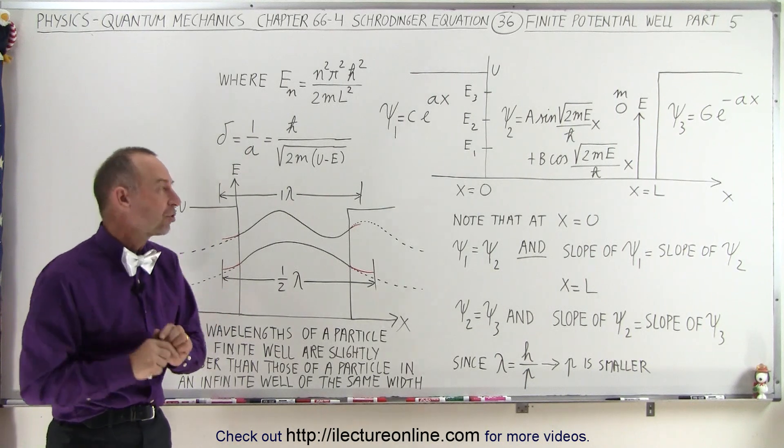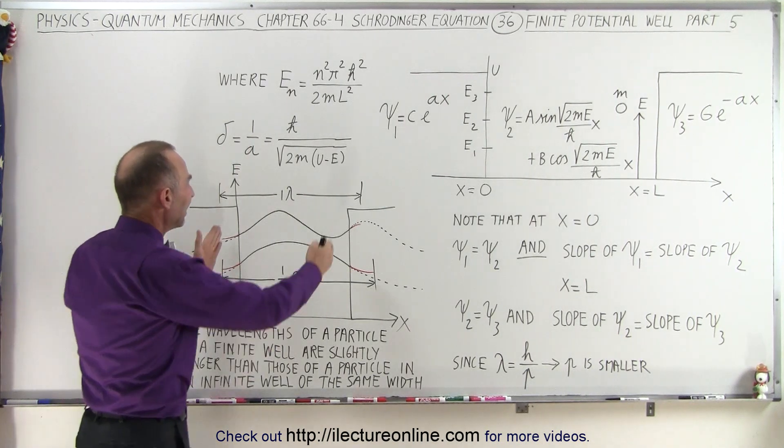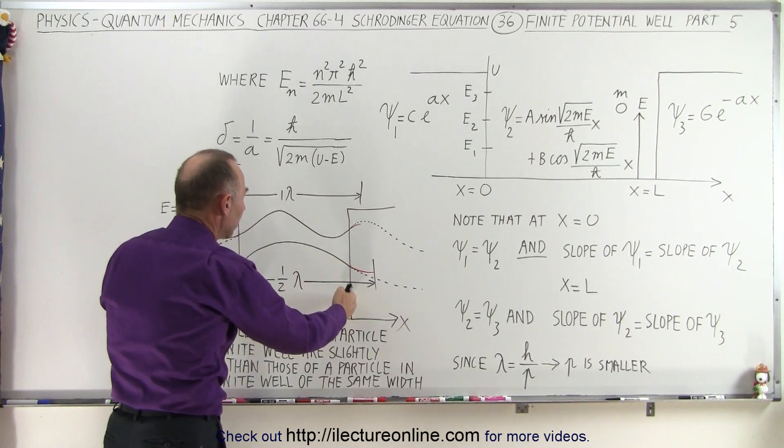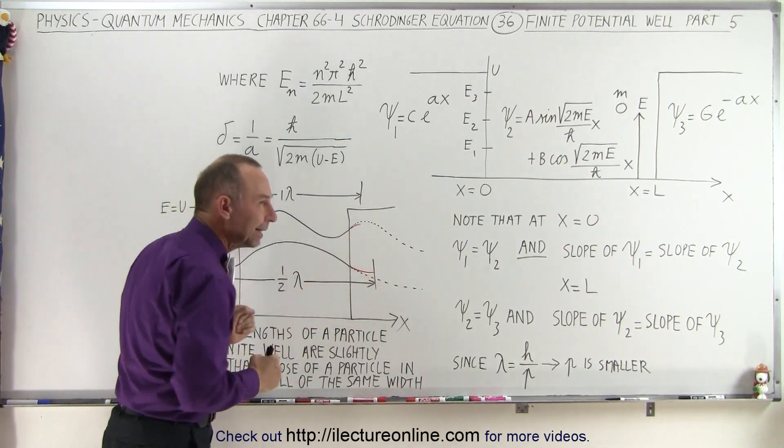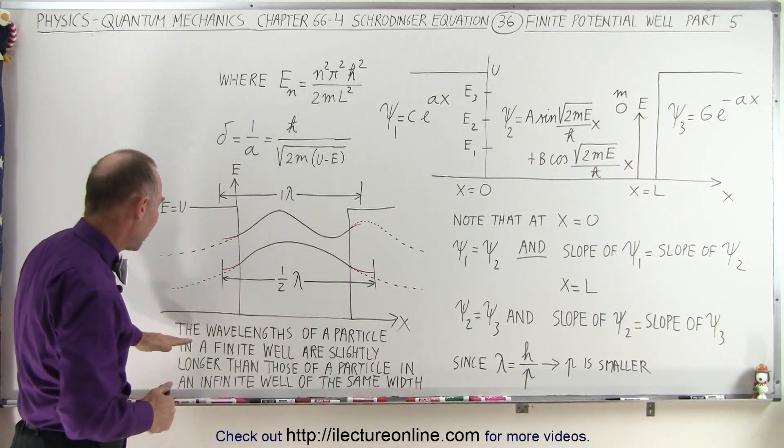One thing that we haven't discussed yet is that it turns out that inside a finite well, the actual wavelength is a little bit larger than the wavelength would be if we're in an infinite well.